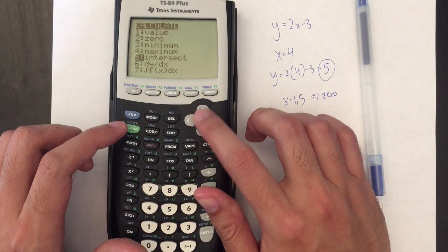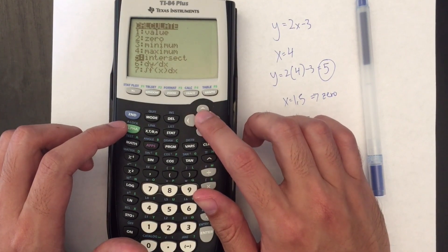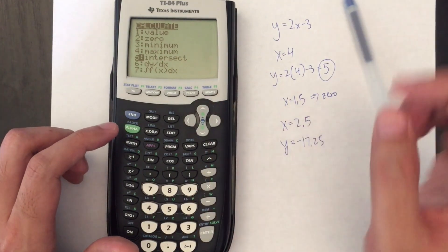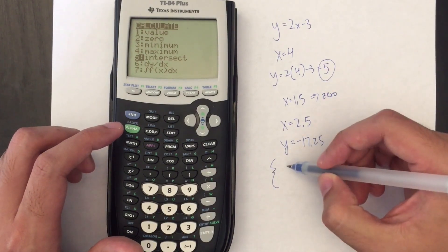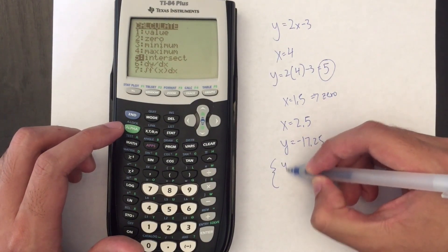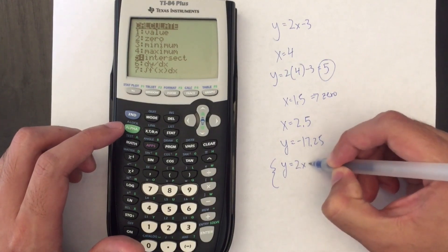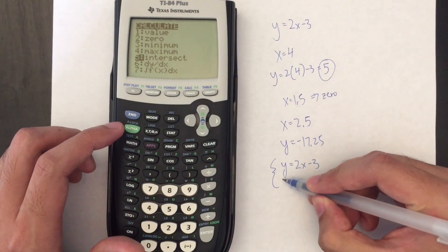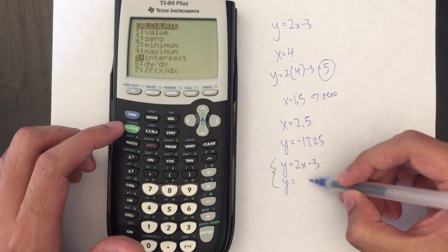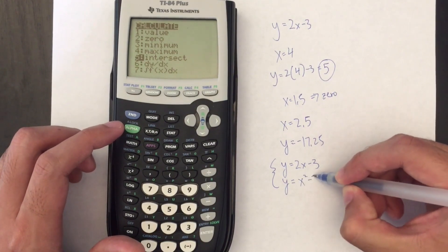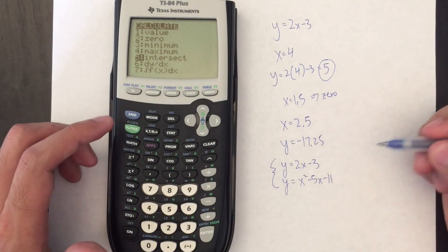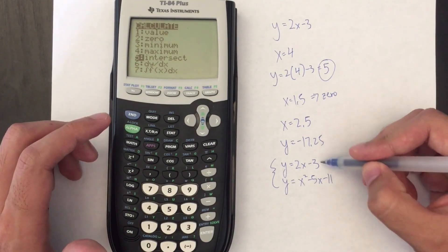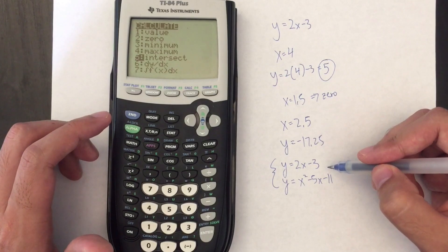So the next one is intersect and this is to find where two graphs intersect, and this is really useful for when you're dealing with a systems of equations question. So imagine that I have my two previous graphs as a system of equations and I needed to find their solution. Well their solution is just their intersection point, the point at which they both cross at the same time.